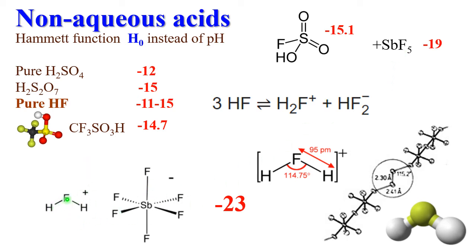The strongest acid we know today is a mixture of HF and SbF₅. There is a cation and an anion of this type. In fact, it's more complex: you have a chain of SbF₅ units connected through F⁻ bridges, and the cation is H₂F⁺.